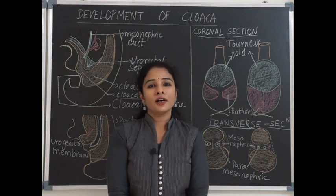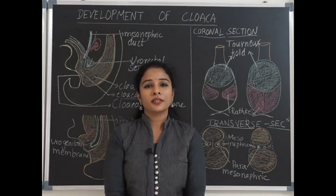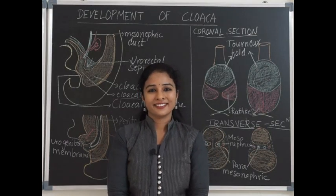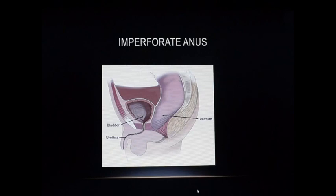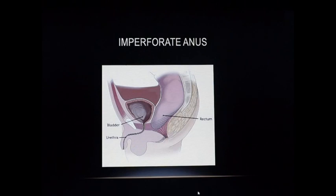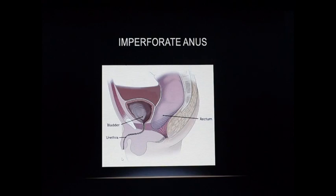This is about the development of the hindgut. Now we shall see the applied aspects. The first condition is imperforate anus, also known as anorectal malformation, and it occurs because of three reasons: failure of rupture of the anal membrane, which separates the anal canal from the primitive rectum; non-development of the ectodermal proctodeum, causing the proctodeum to fail to form the lower part of the anal canal; or atrophy of the lower part of the rectum.